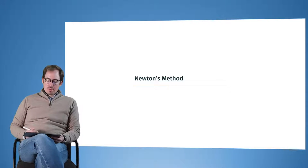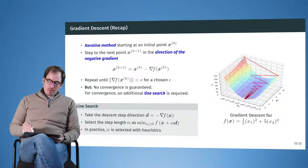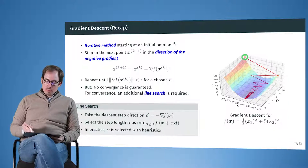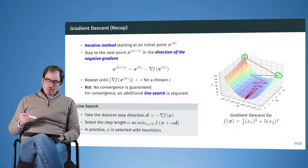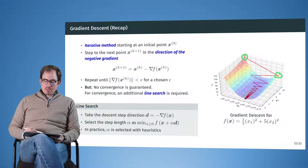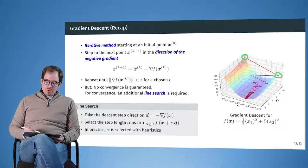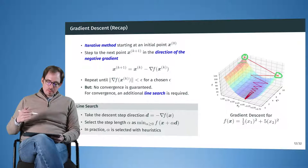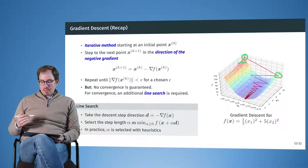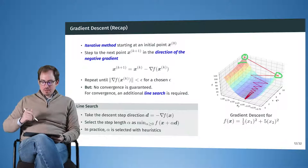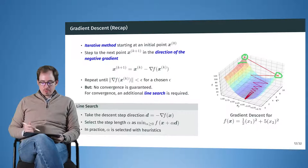Last time we saw gradient descent, so we start with some initial point x0 and then we move to the next point x1 by going into the direction of the gradient at this point. And we use line search to guarantee convergence by not overstepping, by not walking uphill on the other side of the valley.